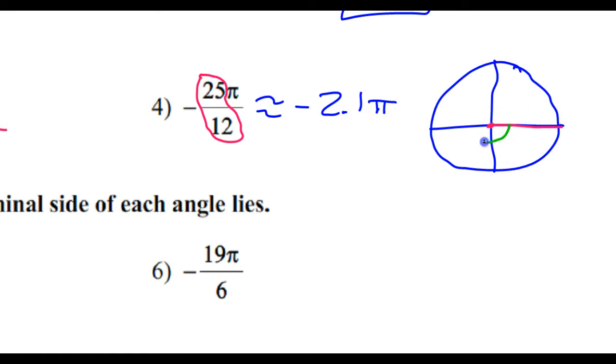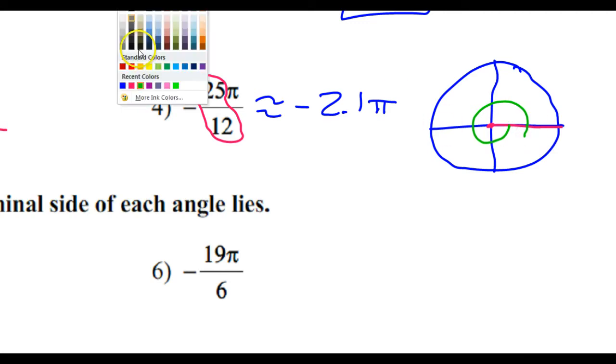And I'm going -2.1π. So -2π is one full revolution. That's -2π so far. So -2.1 is just going to nudge over into the fourth quadrant. I'm just going to scoot over a little bit into the fourth quadrant. And that's the key - what quadrant I'm in.